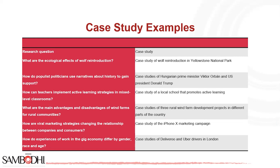How is a viral marketing strategy changing the relationship between companies and consumers? — Case study of the iPhone X marketing campaign. How do experiences of work in the gig economy differ by gender, race, and age? — Case studies of Uber drivers and Deliveroo in London. These names are used as examples — specifically, you can mention your own country where relevant.